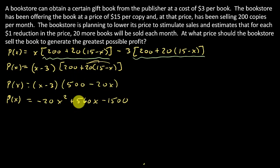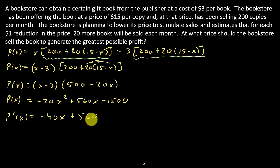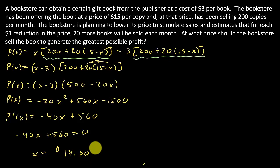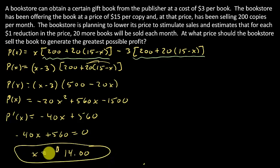Now we're ready to take the derivative. The derivative is negative 40X plus 560. Setting it equal to zero and solving for X gives X equals $14. So the bookstore should sell the book at $14 to generate the greatest possible profit.